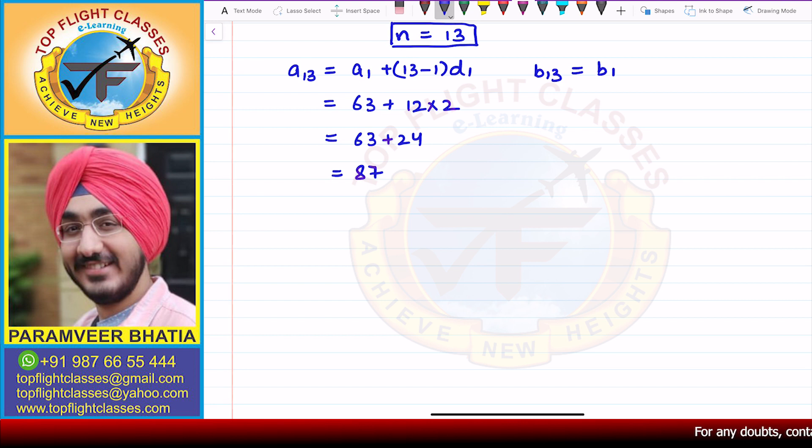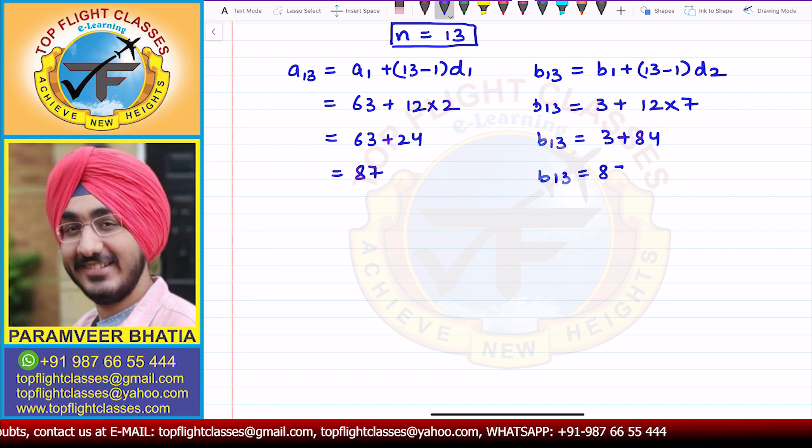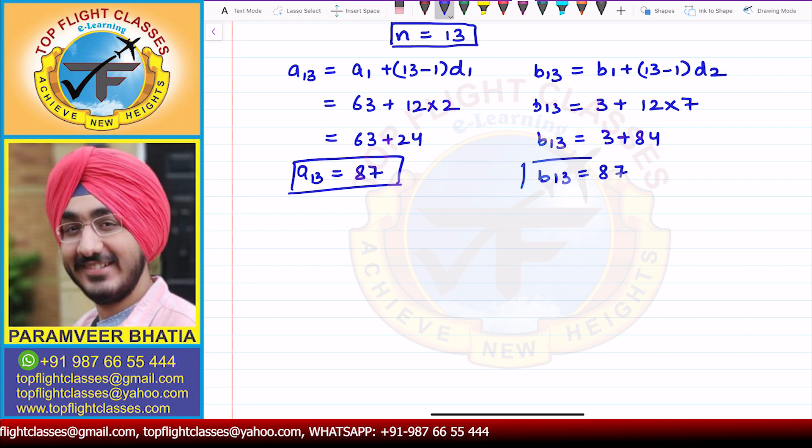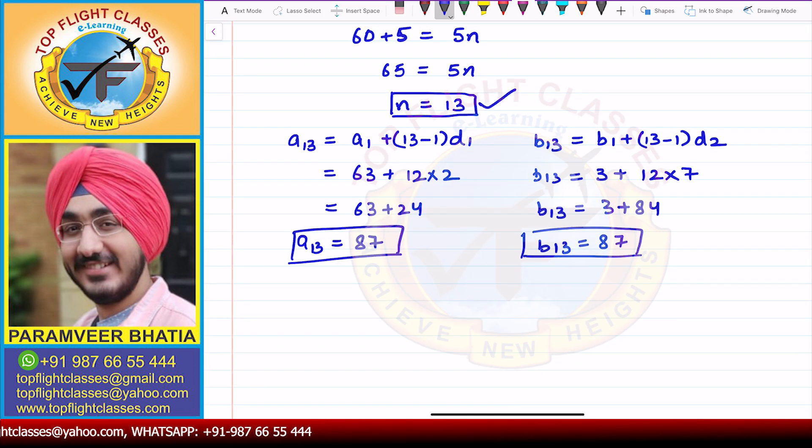we get B1 plus 13 minus 1 times D2. So that will be 3 plus 12 into 7. So here I get that B13 is equal to 3 plus 84, so here B13 is 87. So clearly you can see that A13 and B13 are equal, so our value is 13.